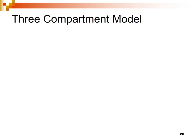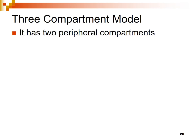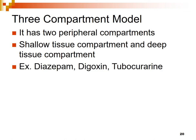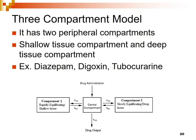This is the three-compartment model. It has two peripheral compartments: a shallow tissue compartment and a deep tissue compartment. Examples of drugs which follow the three-compartment model include Diazepam, Digoxin, and Tubocurarine. This is a schematic representation of the three-compartment model.